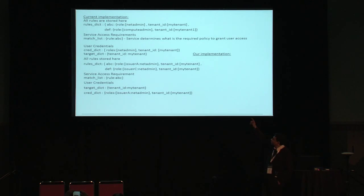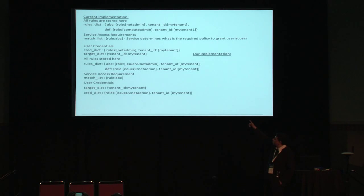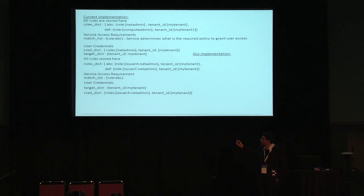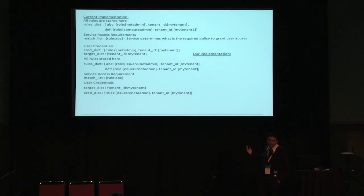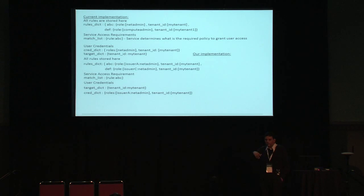Looking at the policies and rules stored in Keystone today, for example, the top rule says 'rules_dict ABC:role net_admin', meaning somebody with the role of net admin can do certain things. In our implementation, you see a similar rules_dict which says 'ABC:role issuer_A:net_admin'. This means the person who is net admin in Cloud A has certain privileges in the local cloud.